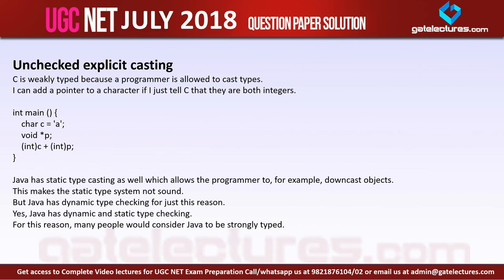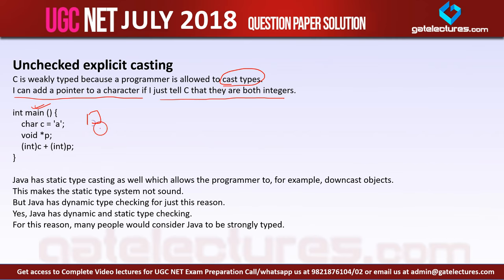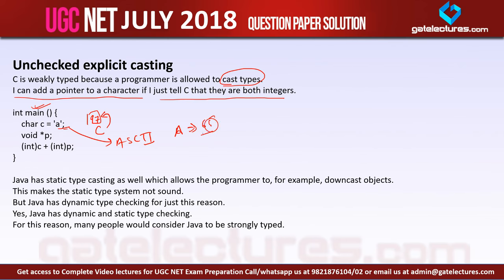Let me explain with a clear example. C is weakly typed because a programmer is allowed to cast types. For example, I can add a pointer to a character if I just tell C they are both integers. Here we have a main function. We created a character C storing 'A', which is stored as an ASCII value.